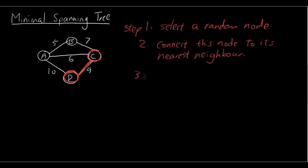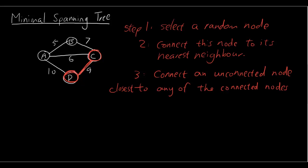Now step 3 we're going to connect an unconnected node that is in this case either A or B to any of the connected nodes and the connected nodes are things I have already drawn in red so C and D are already connected.